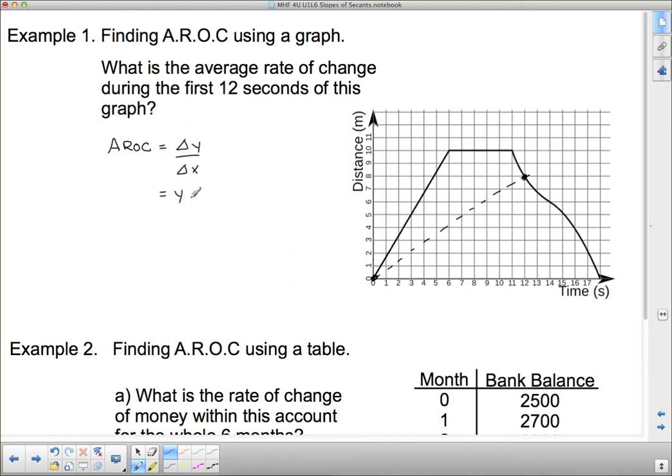So we need the change in y over the change in x. Or in this case, we actually know coordinates: y₂ minus y₁ over x₂ minus x₁. So up here, my y is 8, and my initial y was 0. So I need 8 minus 0. And since it's the first 12 seconds, I'm going to get 12 minus 0. So it's 8/12, which reduces to 2/3, or 0.67 if you care to. Now what is this? This is a distance time graph, so it's in meters per second. And you can leave it as a fraction if you want.